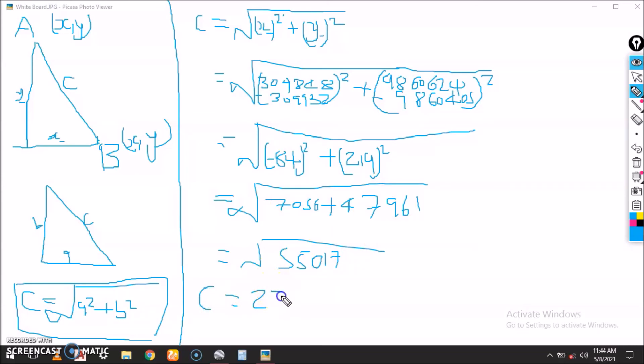This summation of this, so the square root of this, that is C, now we get 234.55 meters. So that is the distance from point A to B.